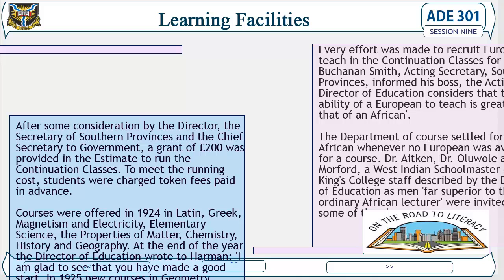To meet running costs, students were charged tuition fees paid in advance. Courses were offered in 1924 in Latin, Greek, magnetism and electricity, electrical science, properties of matter, chemistry, history, and geography. At the end of the year, the Director of Education wrote to Hamann: 'I am glad to see that you have made a good start.' In 1925, new courses in geometry, algebra, trigonometry, and elementary science were added. Every effort was made to recruit Europeans to teach in the continuation classes. Buchanan Smith, acting Secretary of Southern Provinces, informed his superior that the acting Director of Education considered the ability of a European to teach greater than that of an African.